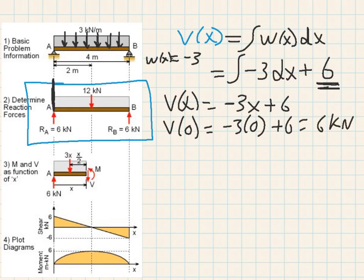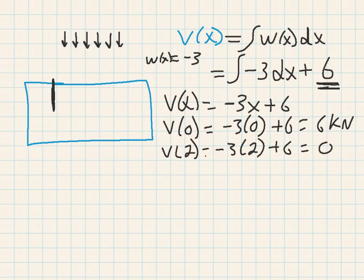This is a resulting force, it's not a reaction force. So now if I said V of 2, negative 3 times 2 plus 6 will give me negative 6 kilonewtons. And that's your location right here.